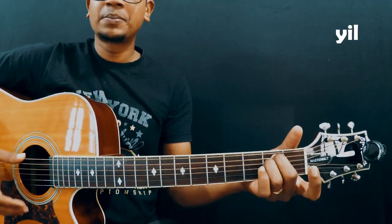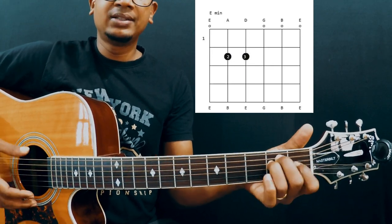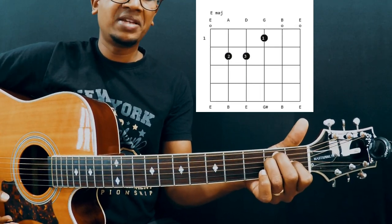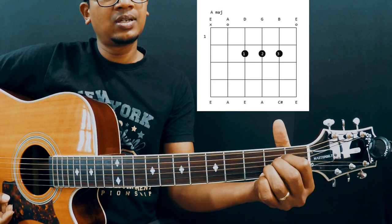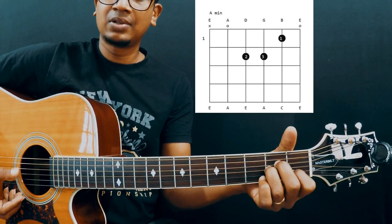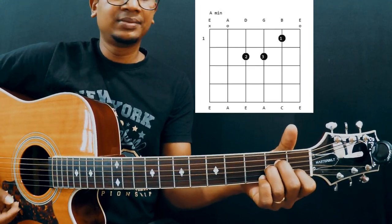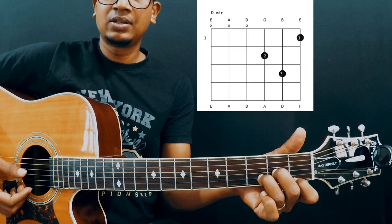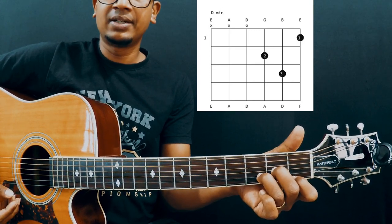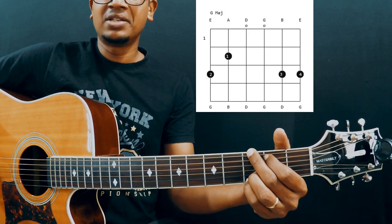All right guys, so far we have learned E minor, E major, A major, A minor, D minor, and G major.